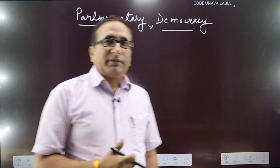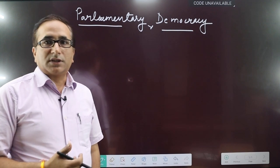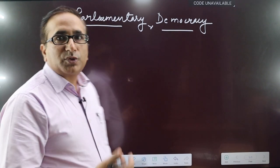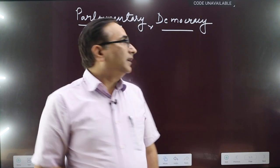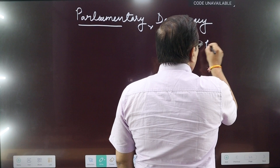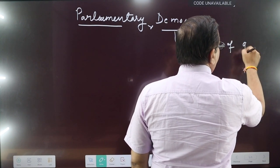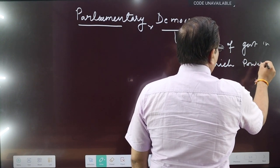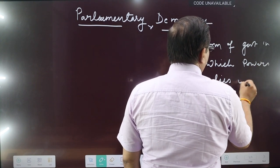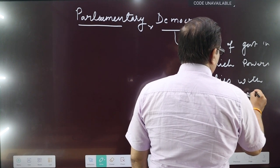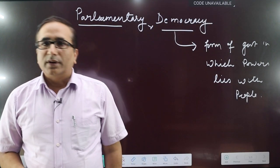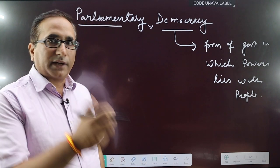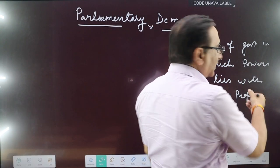Hello everyone, today I will discuss with you a very important concept in Polity that is called Parliamentary Democracy. There are various forms of democracy. Basically, a democracy means a form of government in which power lies with people. Generally we all refer to Abraham Lincoln's definition: rule of people, by the people, for the people. The gist of that definition is the power lies with the people in democracy.